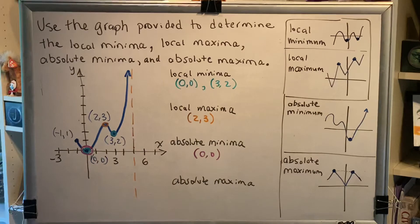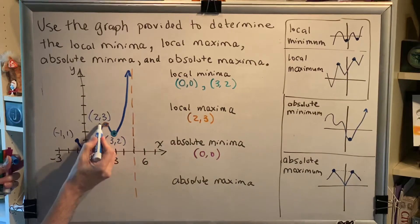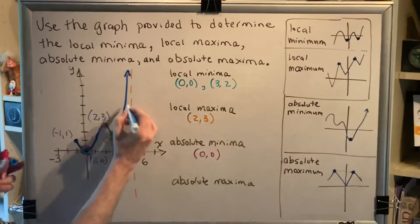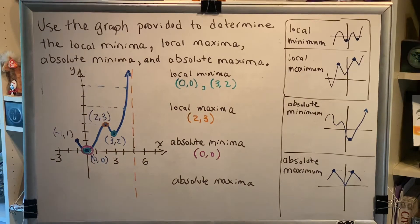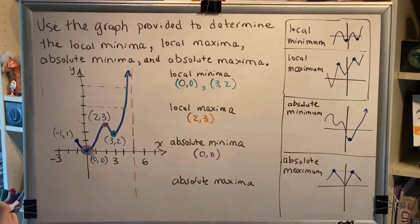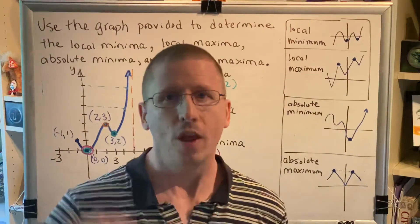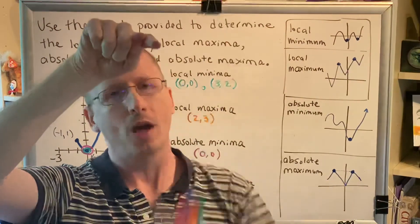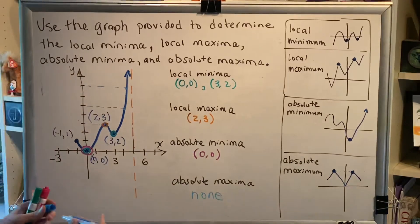Finally, absolute maxima — what is the highest blue point of the entire graph? The most common wrong answer from students is (2, 3), but that's wrong because it has a height of only three, and there are other points with heights of five and seven. However, this graph does not have an absolute maximum because of the arrow. The asymptote tells us the curve forever approaches but never reaches the dashed line, and the arrow indicates it goes up forever. Since it goes up forever, it cannot have a maximum — the answer is none.